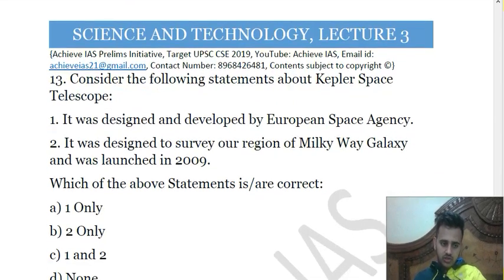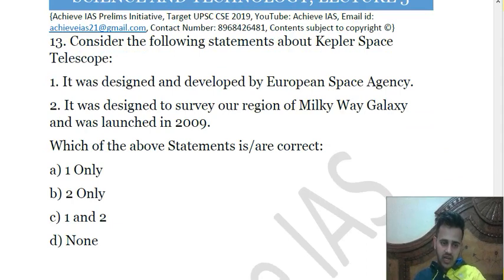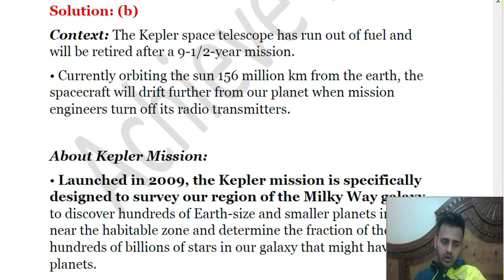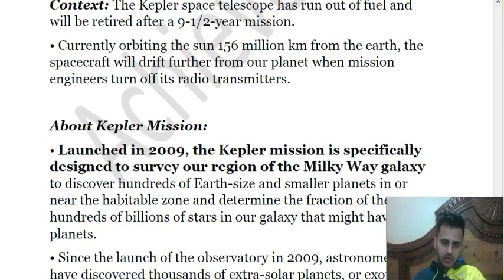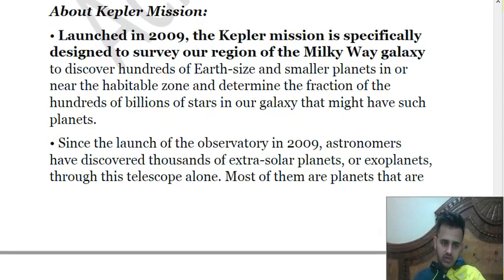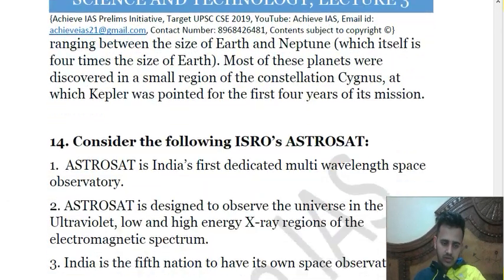The thirteenth question asks about the Kepler Space Telescope. Statement 1: it was designed and developed by the European Space Agency. Statement 2: it was designed to survey a region of the Milky Way galaxy and was launched in 2009. Statement 1 is incorrect — Kepler was developed by NASA, not ESA. Statement 2 is correct. Kepler was designed to survey our region of the Milky Way to discover hundreds of Earth-sized and smaller exoplanets. It recently ran out of fuel after nine and a half years of mission, orbiting 156 million kilometers from Earth around the Sun. The answer is B.